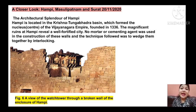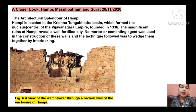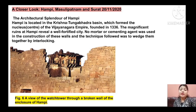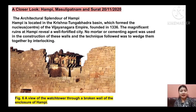Now let's start the next topic of Chapter 6 History. The next topic is 'A Closer Look: Hampi, Masulipatnam and Surat.' First we will start with Hampi — today in this particular class we will only discuss about Hampi. After that in the next class we will proceed towards Masulipatnam and Surat. Our today's topic is the architectural splendor of Hampi.